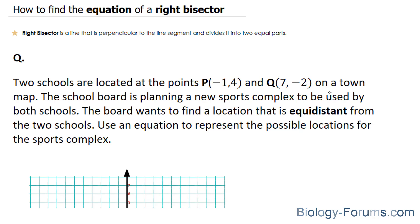In this demonstration, I'll show you how to find the equation of a right bisector. A right bisector is a line that is perpendicular to a line segment and divides it into two equal parts.